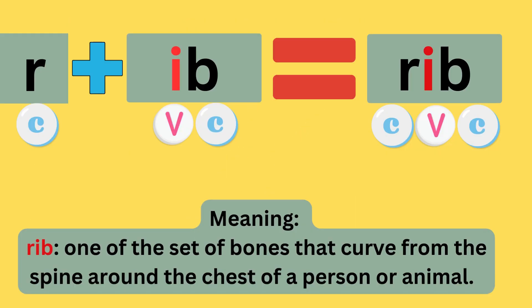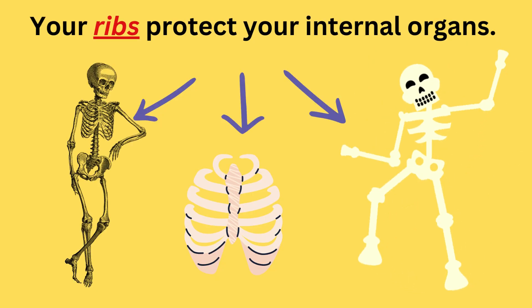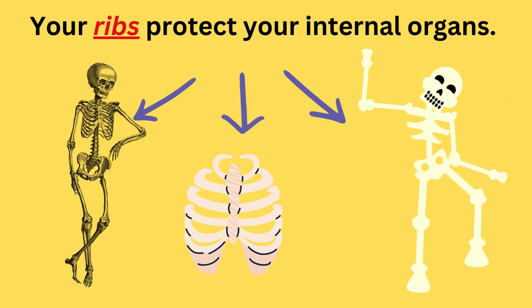R plus -ib equals rib. The sounds are: r-i-b — rib. The meaning is one of the set of bones that curve from the spine around the chest of a person or an animal. Your ribs protect your internal organs.